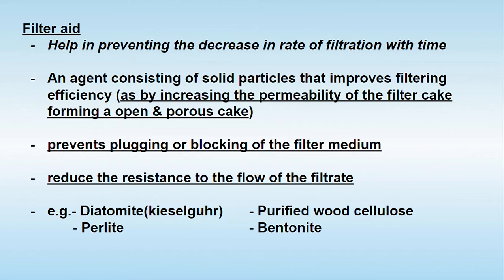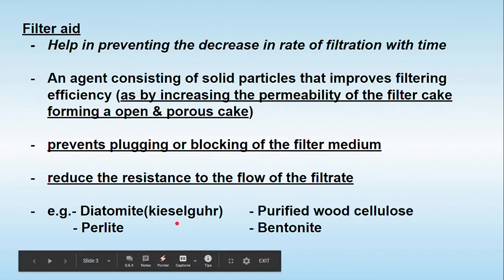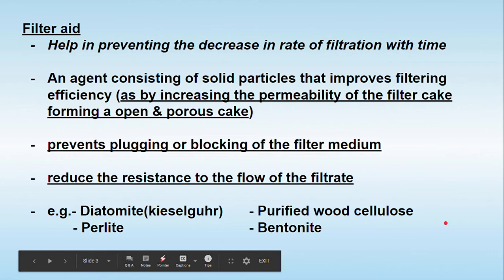The filter aids commonly used are: diatomite, purified wood cellulose, and bentonite. These are the agents widely used as filter aids during the process of filtration. They help in preventing the decrease in the rate of filtration with respect to time.